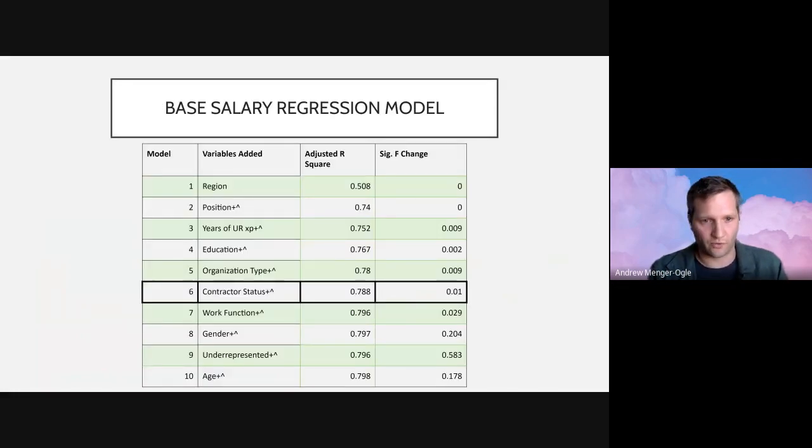And that is going to show the order there. So we went region—and then age went to the bottom—but so region, again that's accounting for half of the variance in pay right there. Position—so junior, senior, and management, that's included there—so that added another 20% of variance. Then we have years of UR experience. A difference here compared to last year is not only are we looking at games user research experience, we're also looking at non-games user research experience, so it's a more robust measure of experience this year.